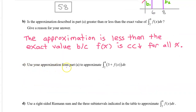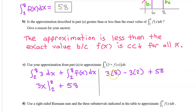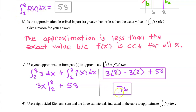Part C: use your approximation from Part A to approximate the integral from 2 to 8 of (3 + f of x) dx. When you have the integral of a sum, you can integrate term by term. So we split this into the integral of 3 plus the integral of f of x. The integral of f of x from 2 to 8 is approximately 58. The antiderivative of 3 is 3x, evaluated from 2 to 8, giving 3(8) minus 3(2) plus 58, which simplifies to 76.